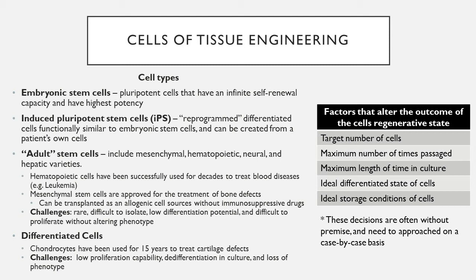Mesenchymal stem cells, which give rise to various types of bone, cartilage, and muscle tissue, have been approved for use in multiple systems to treat bone defects. Nevertheless, adult stem cells are rare, challenging to isolate and expand without altering cell phenotype, and limited in their differentiation potential. These adult stem cells are multipotent — meaning they have a reduced capacity to differentiate and self-renew — in contrast to embryonic stem cells, which are pluripotent.